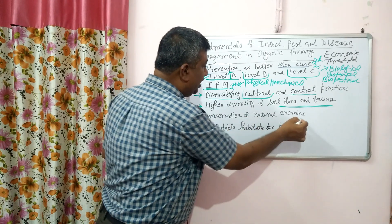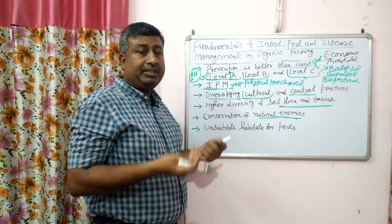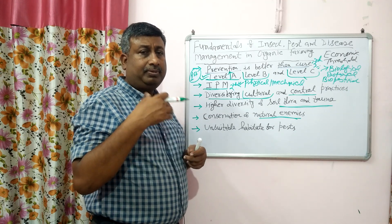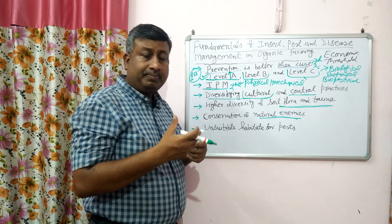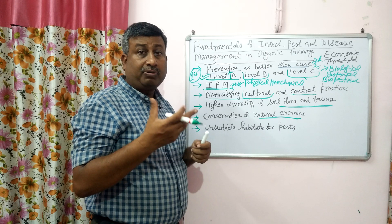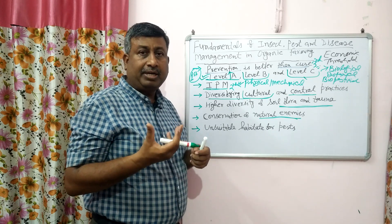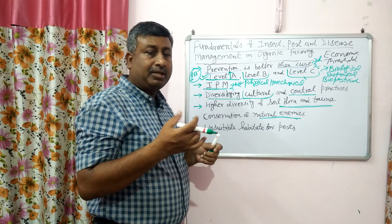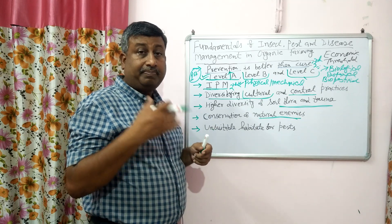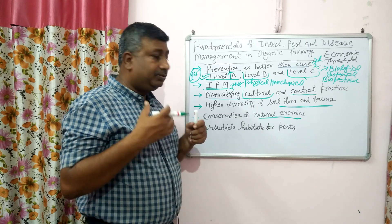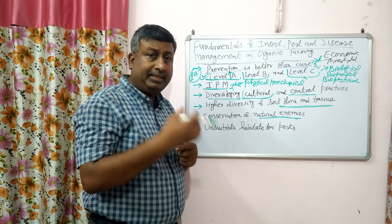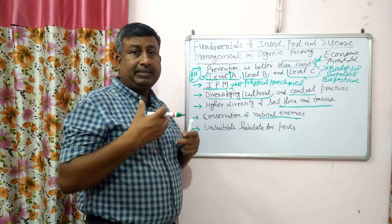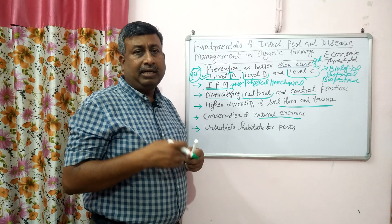Conservation of natural enemies is very important for biological control. In nature, predators and parasites are present. We should conserve and maintain their population, either through laboratory rearing or by releasing them into the field. Trichogramma is a very good example. Natural enemies may also be microbial. The ladybird beetle is a well-known example of a natural enemy. If we maintain and increase their population, insects and diseases are naturally controlled.